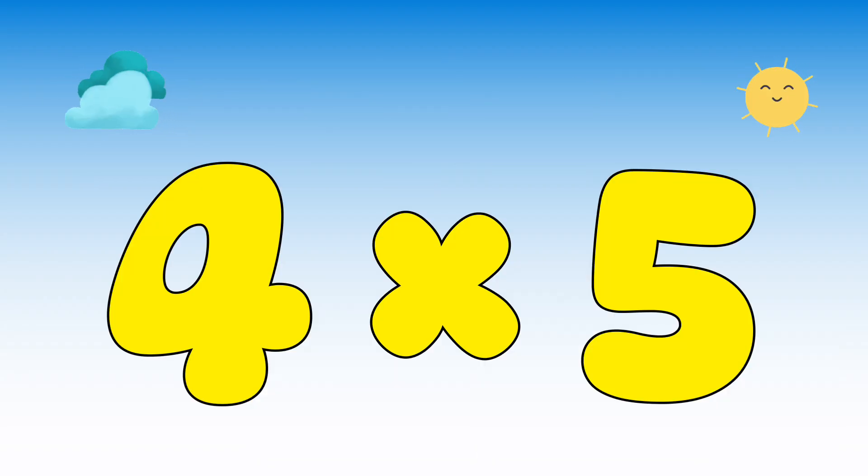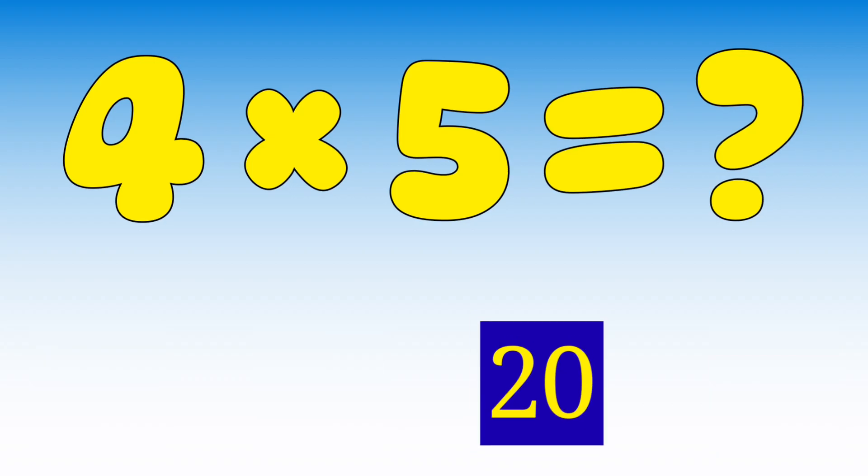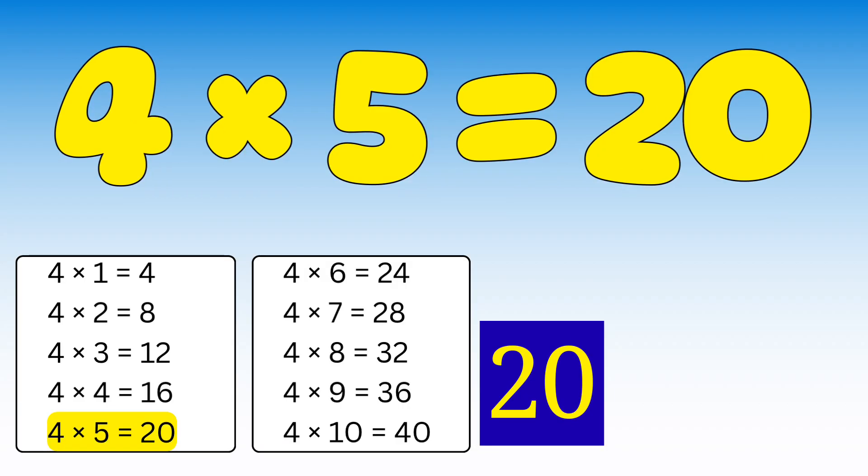Here comes another one. What is 4 times 5? Let's check the options. Is it 15, 18, 20, or 22? Yes, the correct answer is 20. Well done! 4 times 5 equals 20.